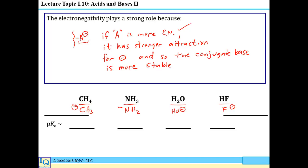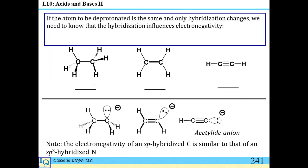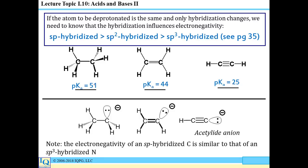Ranking familiar organic species in terms of acidity: fluorine is the most electronegative, followed by oxygen, then nitrogen, with carbon the least electronegative. This reflects the stability of the anions — fluoride is the most stable — as well as the strength of the acid that produced it. Hydrofluoric acid is a much stronger acid than water, which is stronger than ammonia, which is stronger than methane. Additionally, different hybridizations on the same atom change its electronegativity: the more s-character, the more electronegative. SP, SP2, and SP3 carbons illustrate this.